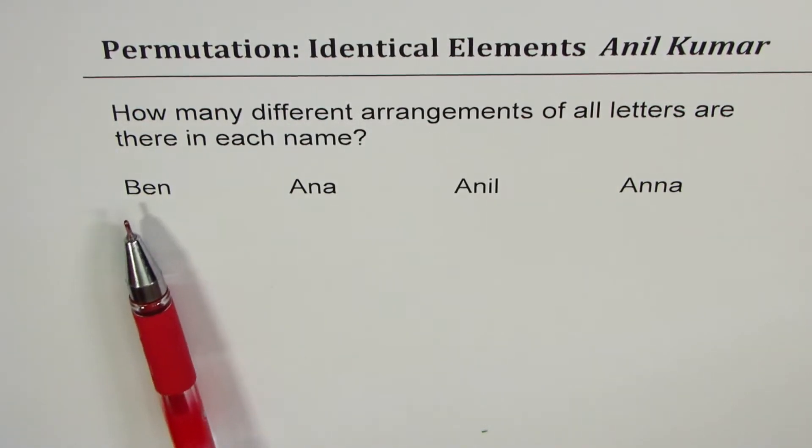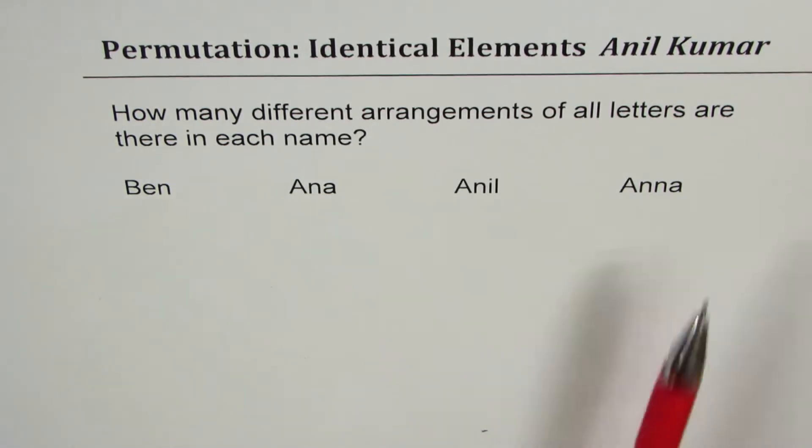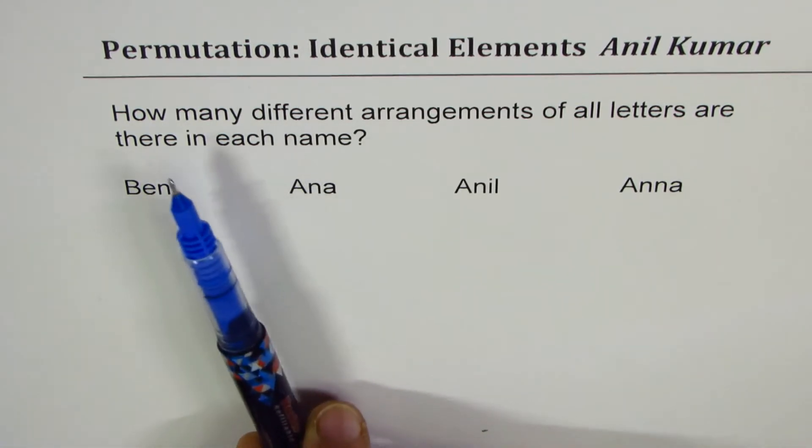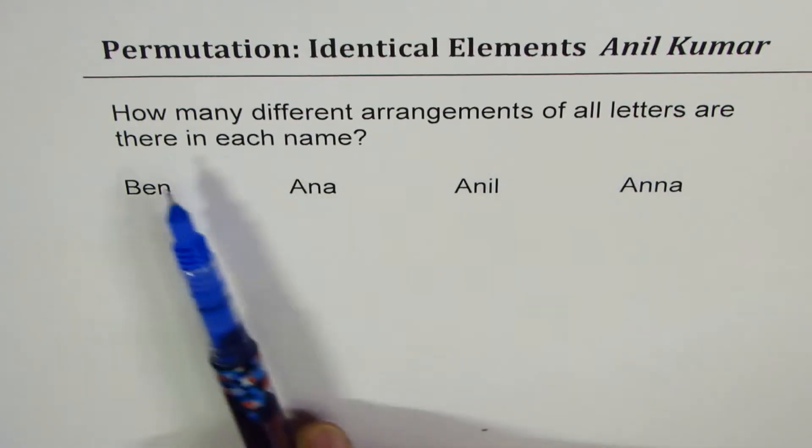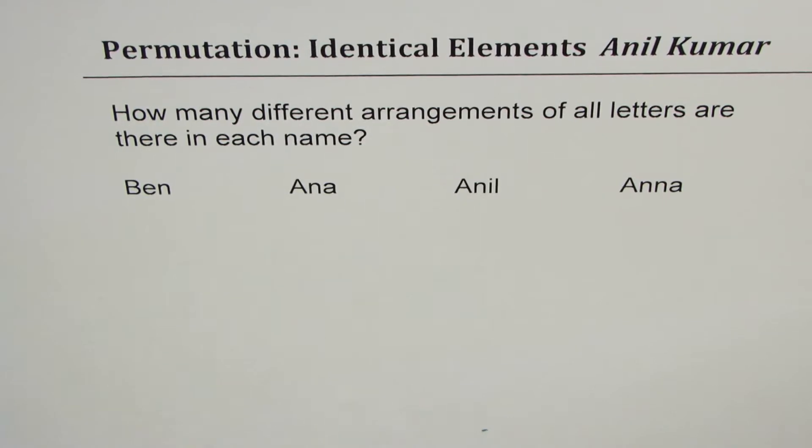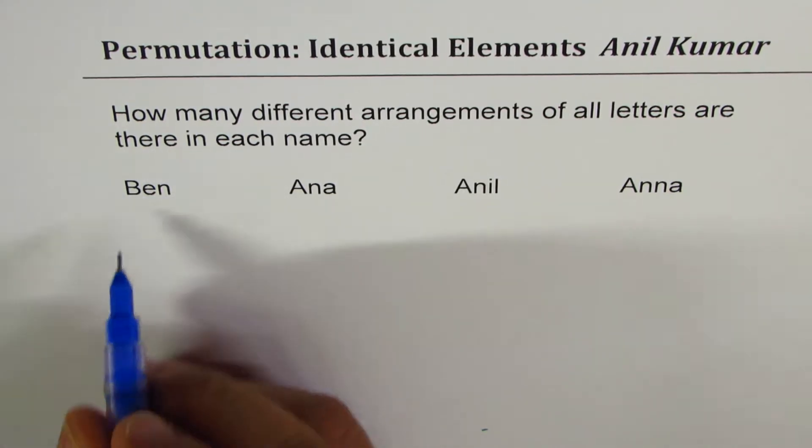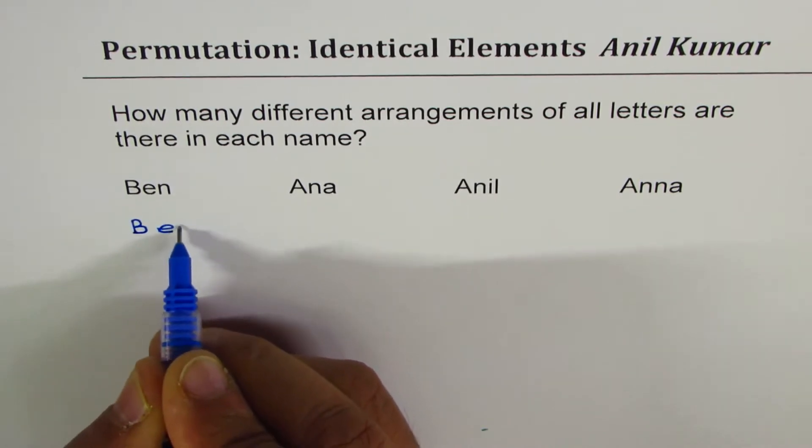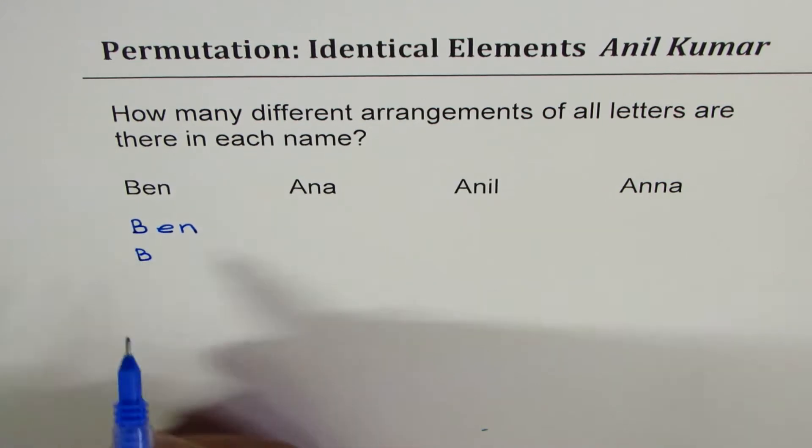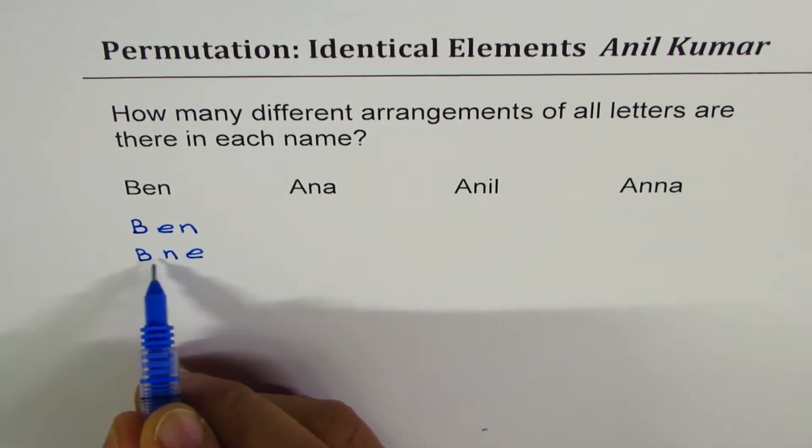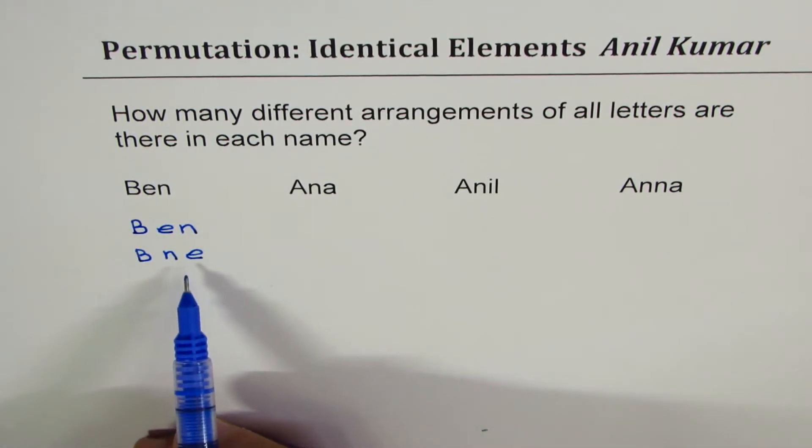Let's begin with the very first name which is Ben. I've taken very simple names, just three letters or four letters, but it has the quality and the width which will make you understand the concept. How many different arrangements of all letters are there in each name? We'll have a very systematic approach to count these numbers. If I want to find number of arrangements, we can begin with B. One will be Ben itself. Then we could start with B, but instead of E, we could have N and then E. These arrangements may or may not have any meaning. We are only interested in counting the number of arrangements.